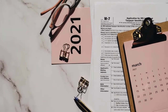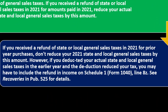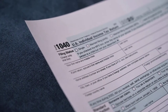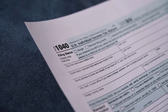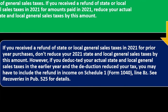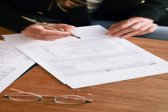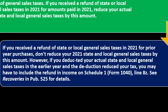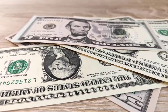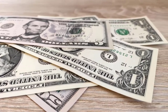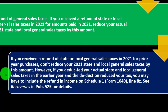Let's look at that one more time. If you received a refund of state or local general sales taxes in 2021 for amounts paid in the same year 2021, you're going to reduce your actual 2021 state and local general sales taxes by this amount. But if you received a refund in 2021 for prior year purchases, you most likely would not go back to the prior year to fix it — instead, you'd include it as income in the current year, similar to how we handle state and local income taxes. See Publication 525 for more details if applicable.